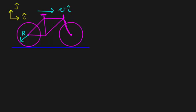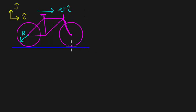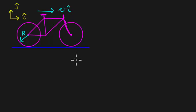In a previous video we had a bicycle moving at a velocity v in the i-hat direction, and we were interested in velocities at various points along the front wheel. In this video, we want to extend those results and look at a very important result that has to do with acceleration.